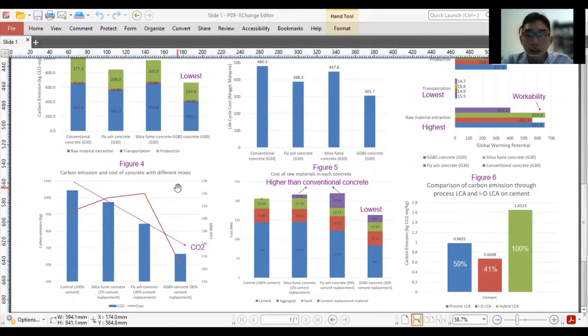Figure 5 shows the cost of each raw material is obtained from Quantity Surveyor Online Malaysia and Alibaba. The cost of fly ash concrete and silica-fume concrete is higher than conventional concrete, because the mix design does not reduce the use of cement significantly as compared to GGBS concrete. GGBS concrete has the lowest cost because pozzolanic reaction of GGBS helps to increase the compressive strength and less cement is used for strength gaining. Thus, the cost reduces significantly.